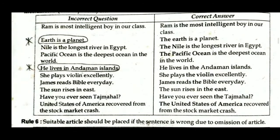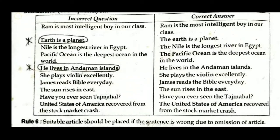'Pacific Ocean is the deepest ocean in the world' is incorrect. Before seas and oceans we must use 'The' — correct is 'The Pacific Ocean is the deepest ocean in the world.' 'He lives in Andaman Islands' is incorrect; before islands, use 'The' — correct is 'He lives in the Andaman Islands.' 'She plays violin excellently' is incorrect; before musical instruments, use 'The' — correct is 'She plays the violin excellently.'